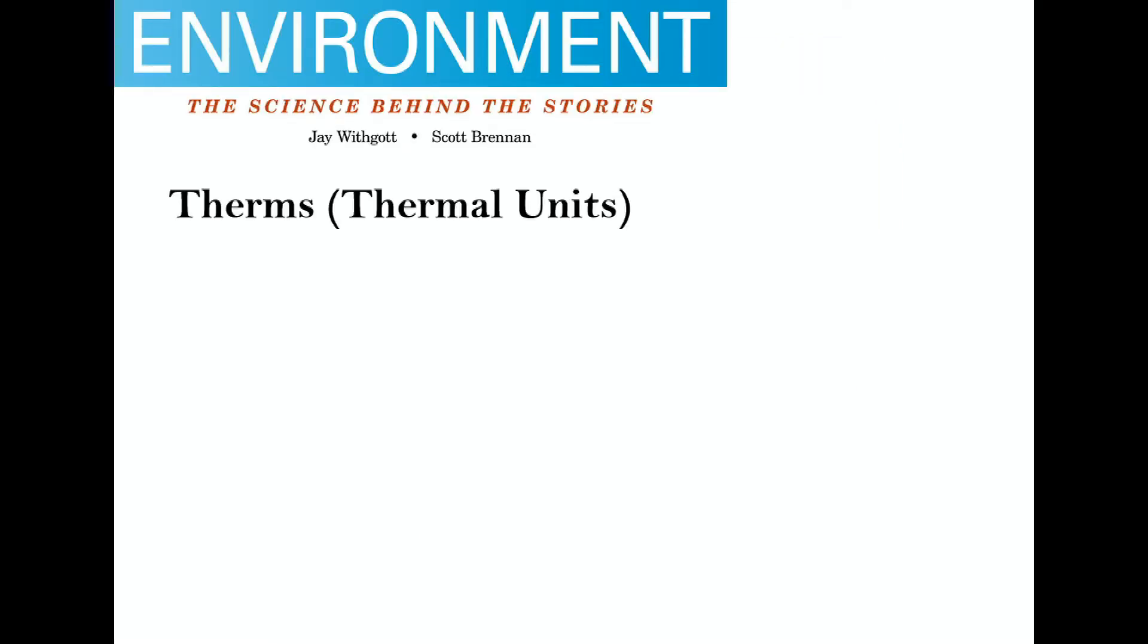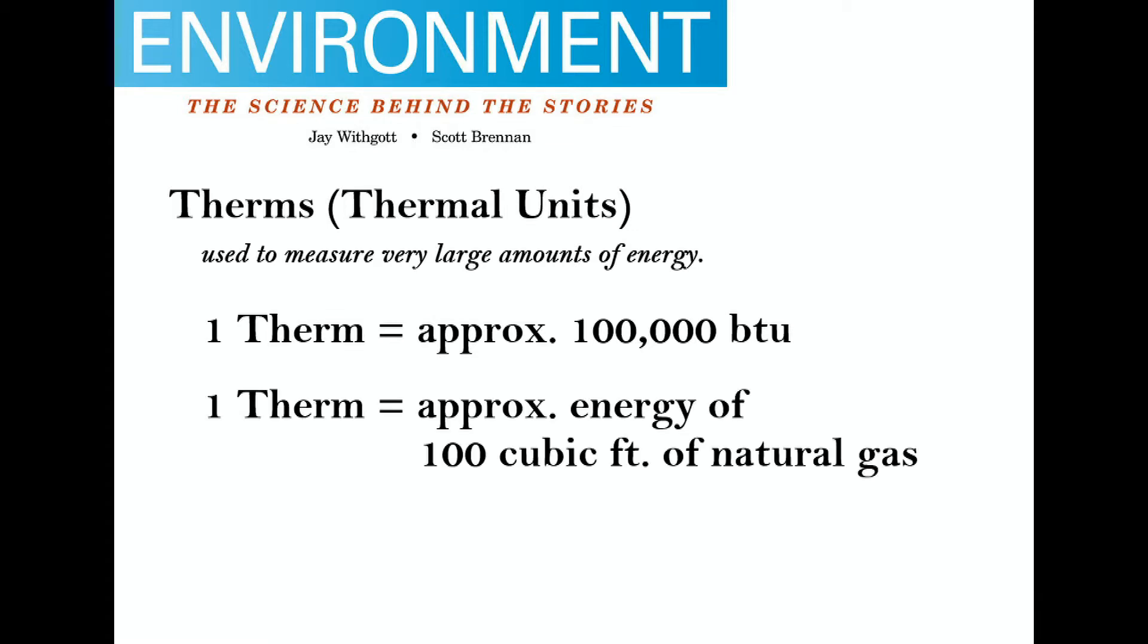Therms, or thermal units, are used by gas companies to measure sales. One therm equals 100,000 BTU. Natural gas at normal temperature and pressure has a heat value of 1030 BTU divided by feet cubed. Therefore, one therm equals 100 cubic feet of natural gas.